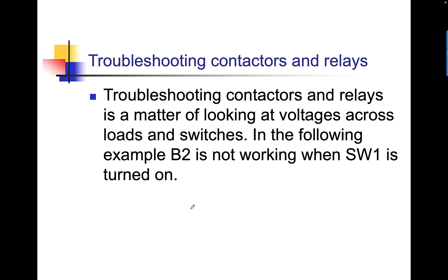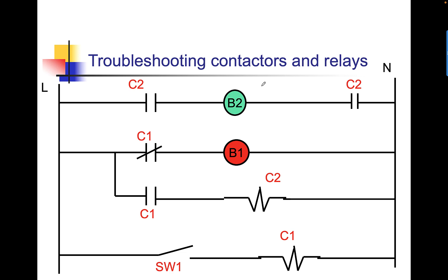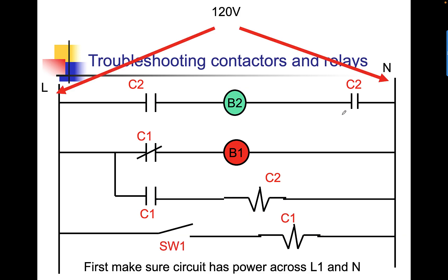Troubleshooting contactors and relays is a matter of looking at voltage across load and switches. In the following example, B2 is not working when SW1 is turned on. B2 is here. It's not working when we turn SW1 on. So, what is supposed to happen? If I close SW1, we energize C1. We close that one, the normally open. We open the normally closed. We energize the coil of C2, which should close C2 normally open contacts. That's what should happen. Now, we have to find out what's happening because you can't see these open and closed contacts. We first want to make sure we actually have power. We have power. We read 120.